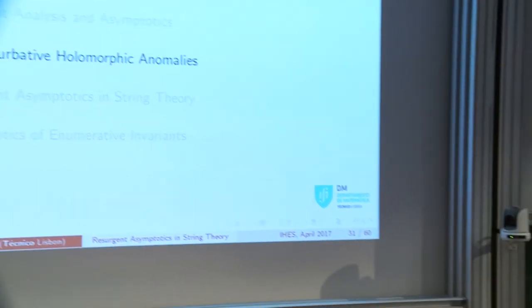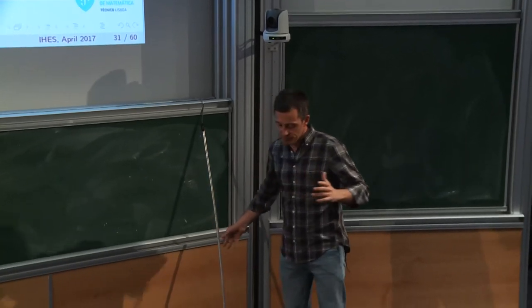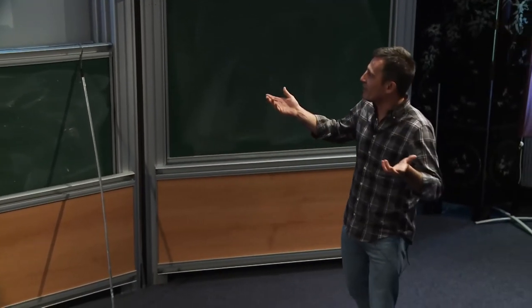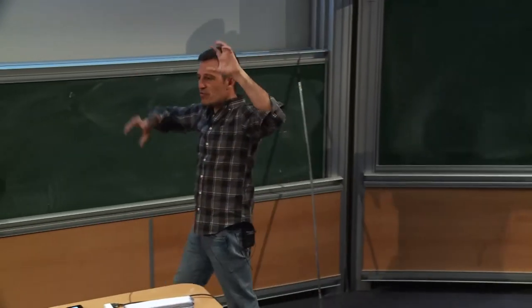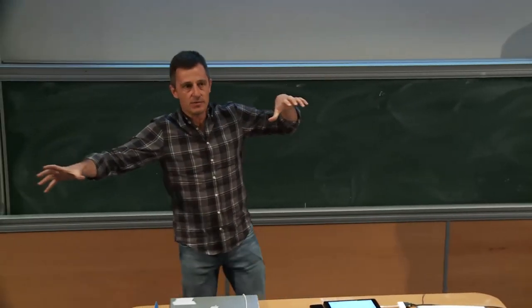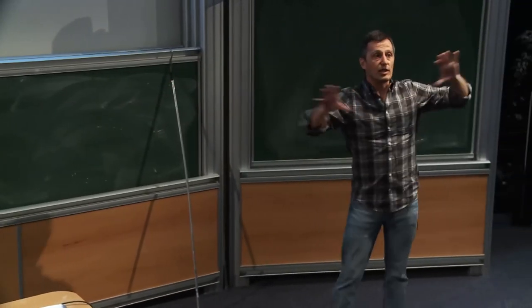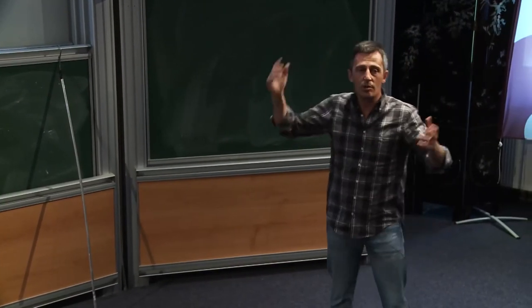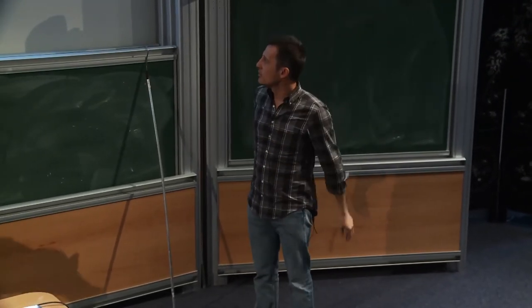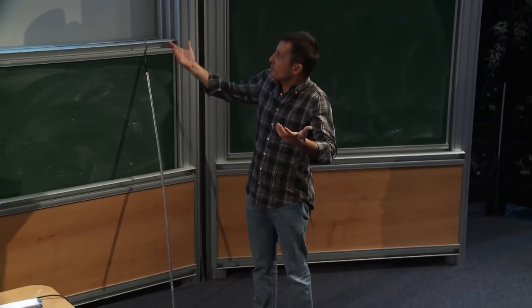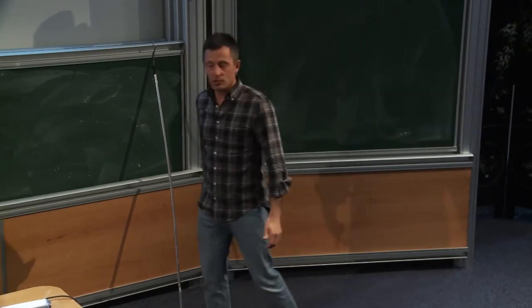That concludes the first half. We have given the formalism of the alien derivative, computed all required information on the discontinuities of the trans-series, and written down quite general formulas for asymptotics — which we can use to check if the trans-series for string theory is working, and then attempt to resum and obtain information at non-perturbative values of the string coupling.